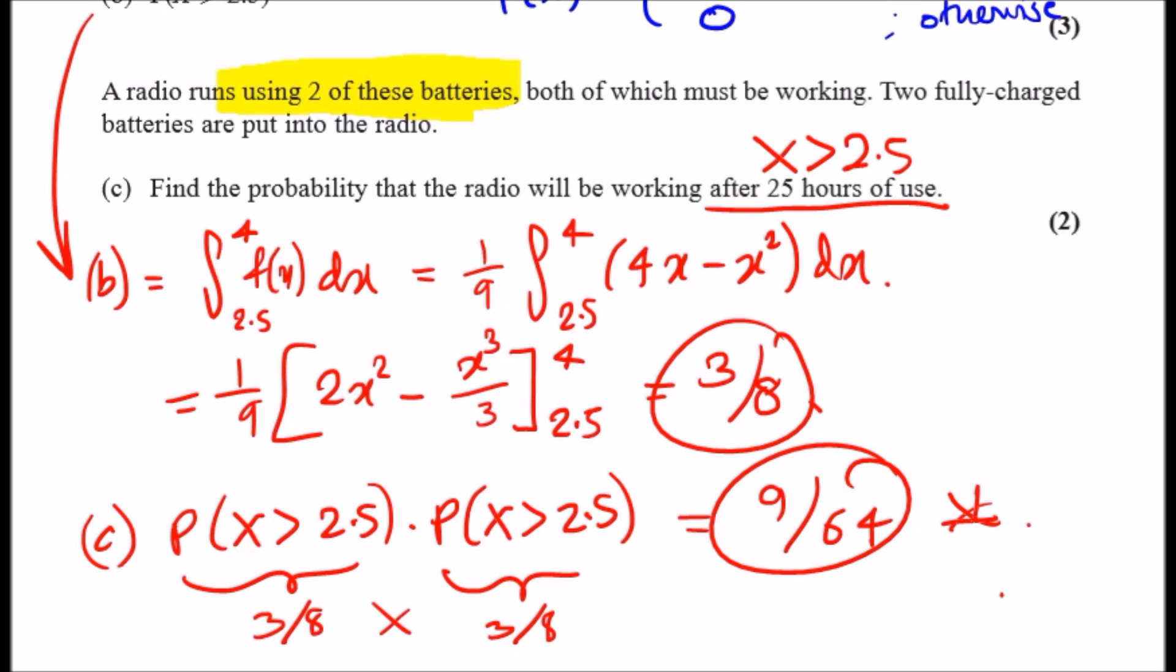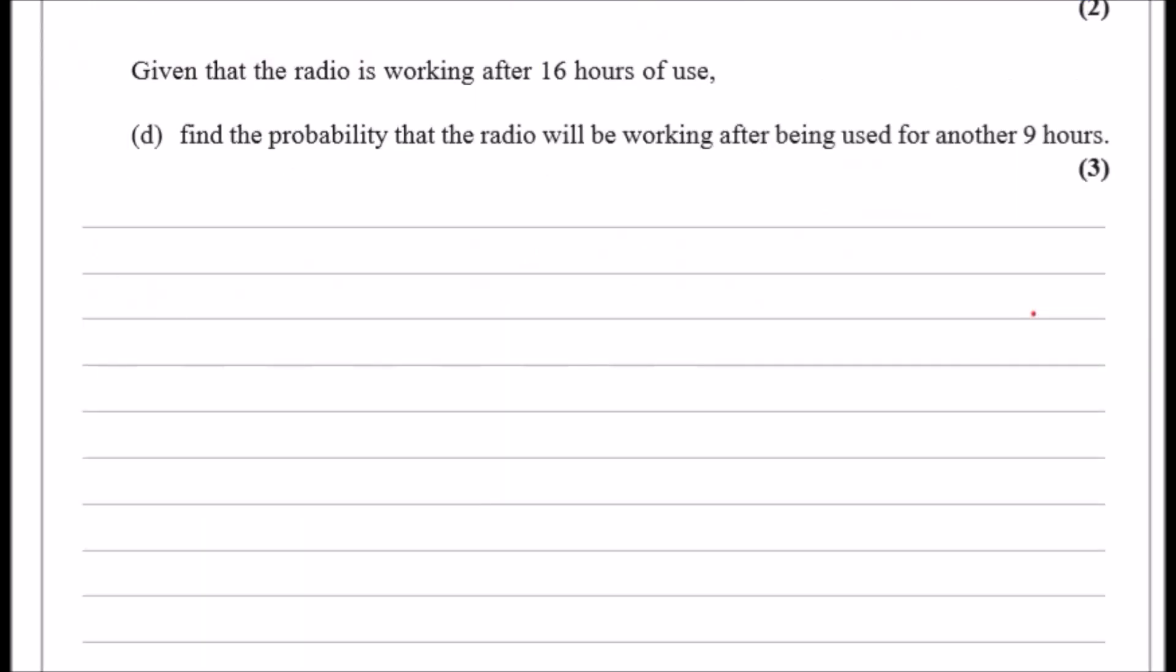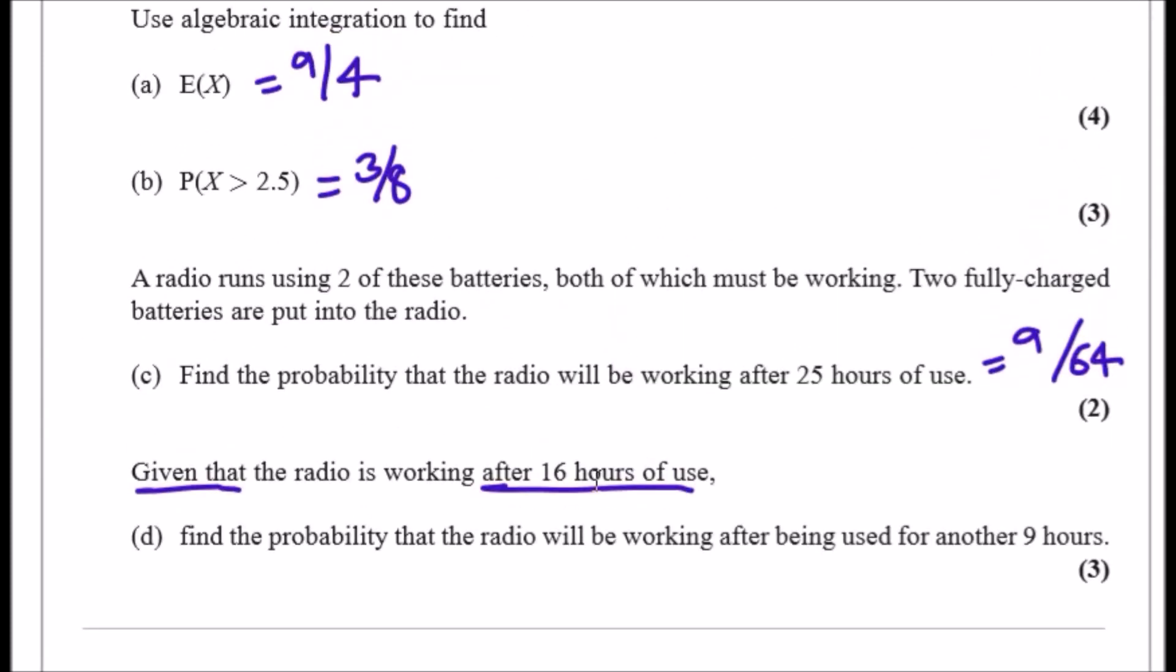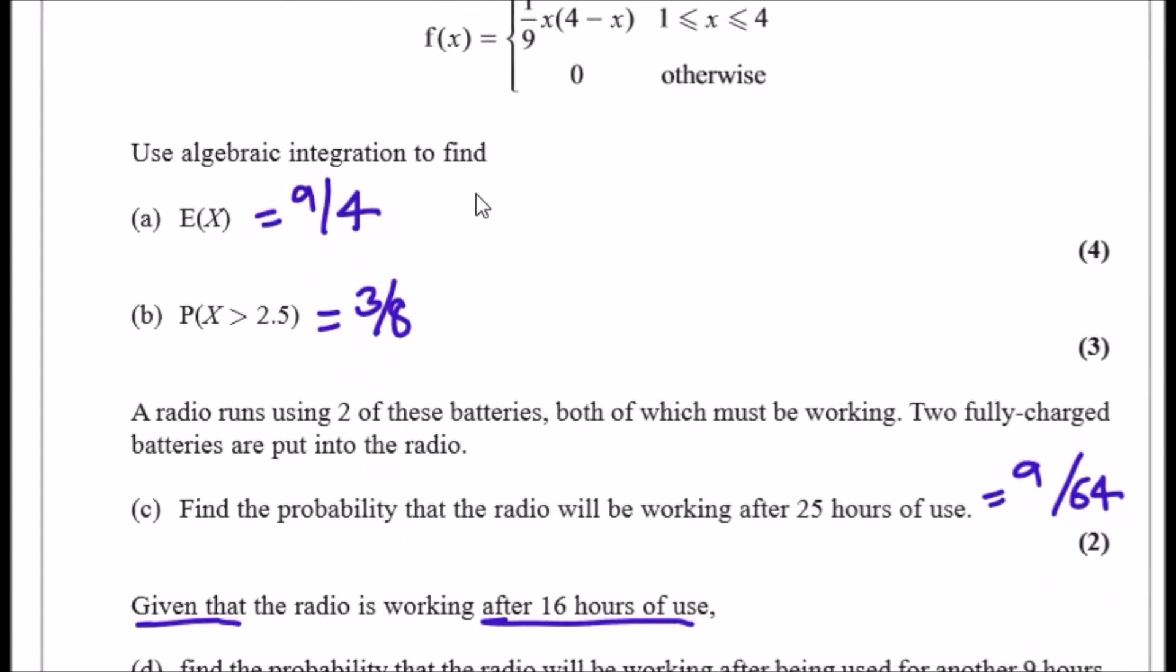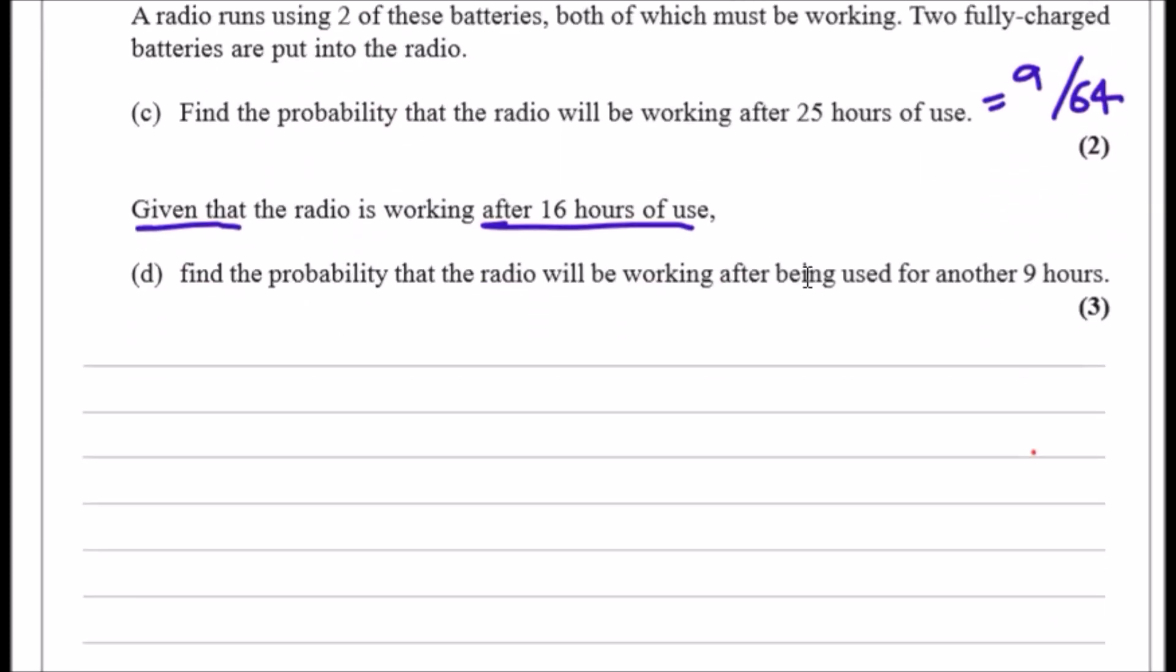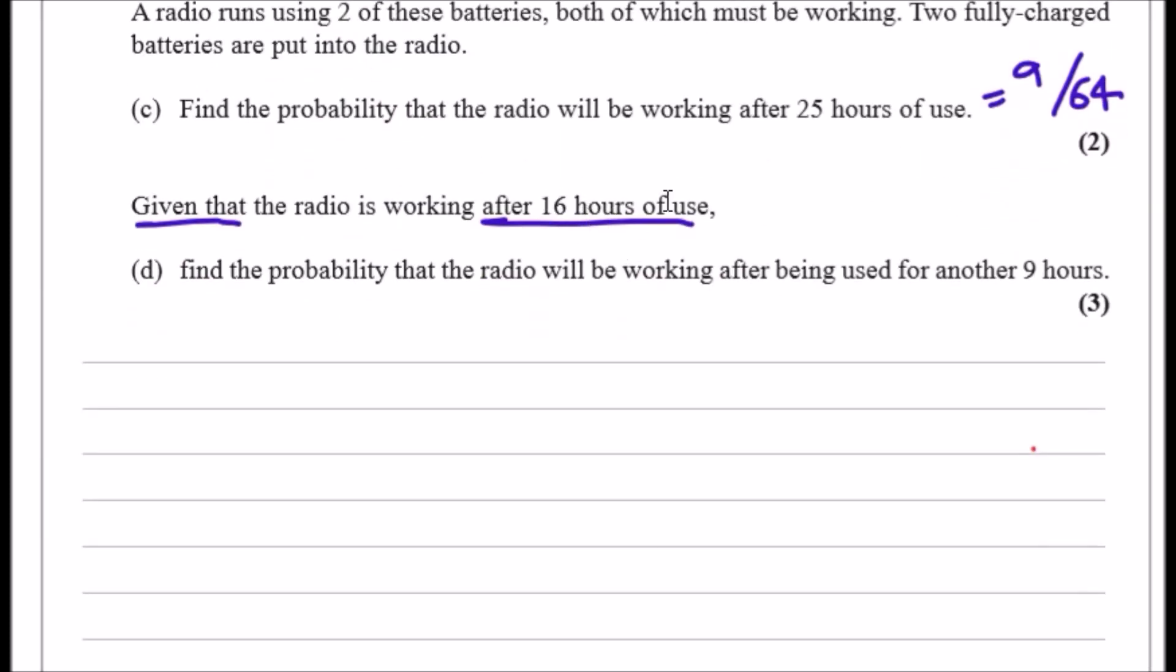The final part, part d. Given that the radio is working after 16 hours, find the probability that the radio will be working after being used for another 9 hours. We're using a 'given that' question, so the probability goes on the bottom half of the fraction. After 16 hours—we're working in tens of hours—as you recall from part c, 25 hours literally meant X > 2.5, so this means X > 1.6.